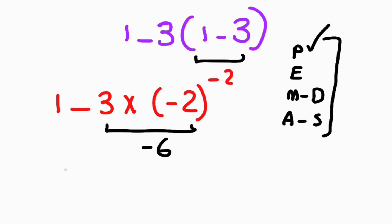At the end, we have 1 minus negative 6. So, negative times negative equals positive. Now, 1 plus 6 equals 7.